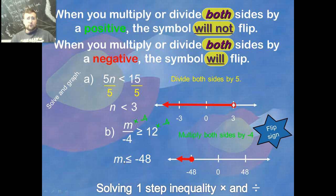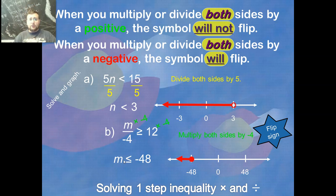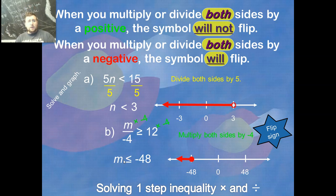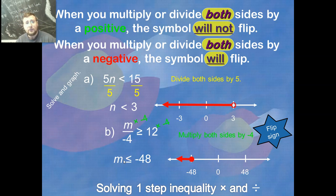Notice that dividing by a positive did not flip the sign, but dividing by a negative did flip it. Everything else is the same as solving equations. Just remember: multiplying or dividing by a negative flips the inequality sign — other than that, it's just like solving normal equations. On the next video we'll get tougher by doing two-step inequalities. I'll see you then.